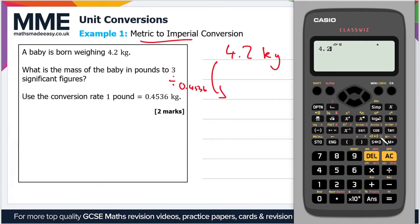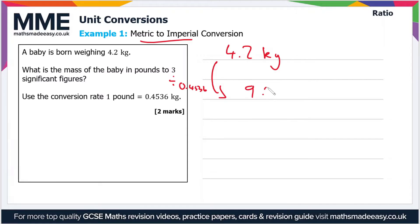Let's just whack that into the calculator: 4.2 divided by 0.4536. That gives us 9.259, but the question wants the answer to three significant figures, so the answer is 9.26 pounds.